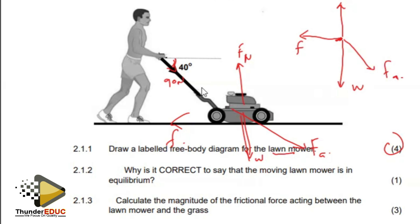In most cases, we draw the components of forces, not just the forces themselves. Then 2.1.2, why is it correct to say that the moving lawnmower is in equilibrium? We could say it's in equilibrium because the lawnmower is moving at a constant speed.